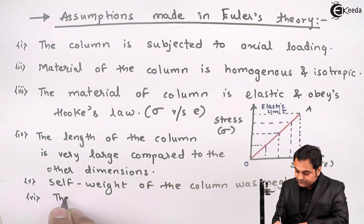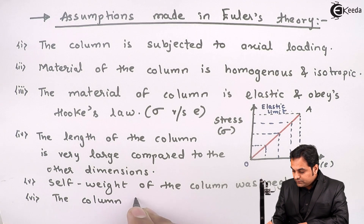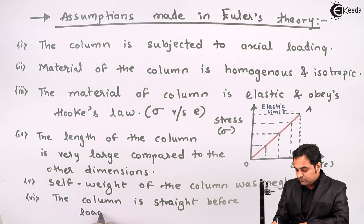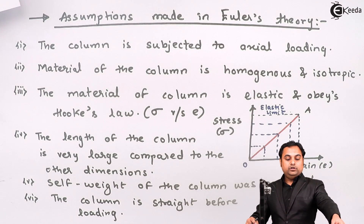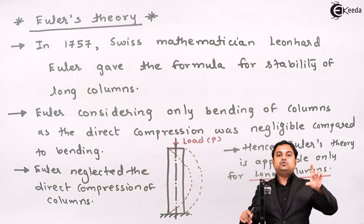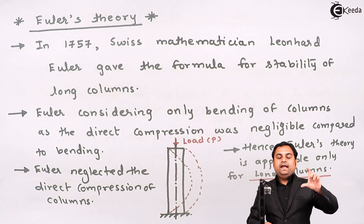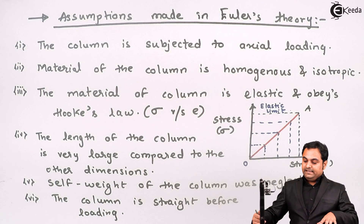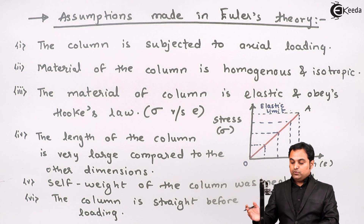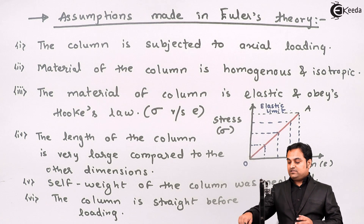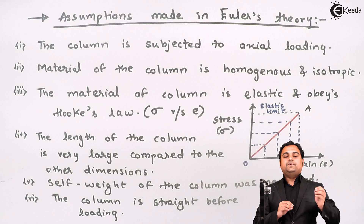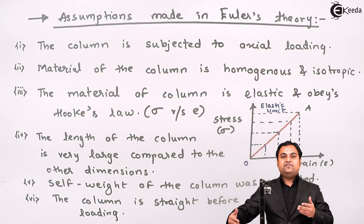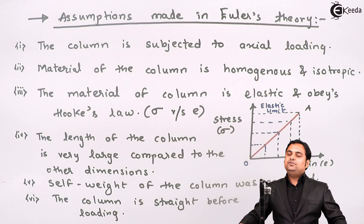The next assumption: the column is initially straight — it means the column is not initially bent. Initially the column is straight, and only when the load is acting will the column bend. By taking these assumptions, Euler derived the formula later called Euler's formula, or the calculation of Euler's crippling load or Euler's buckling load. In this video we have seen the assumptions made in Euler's theory.